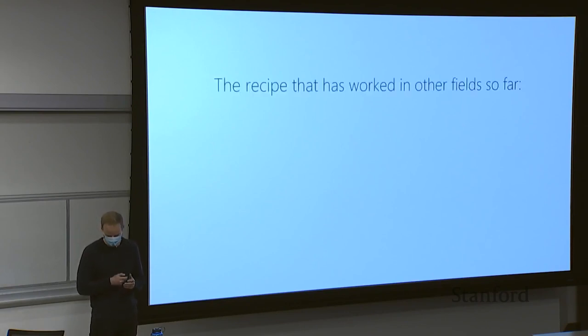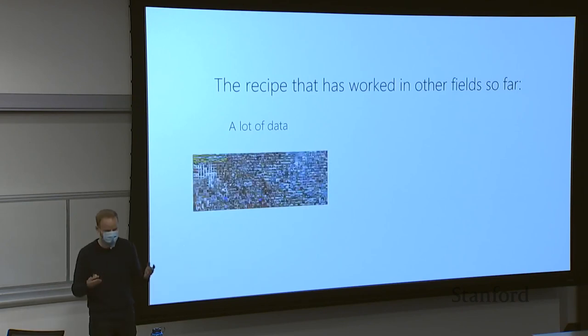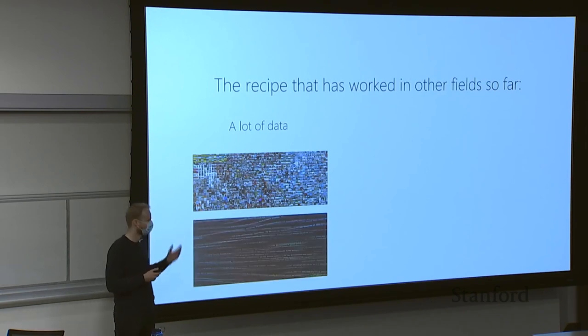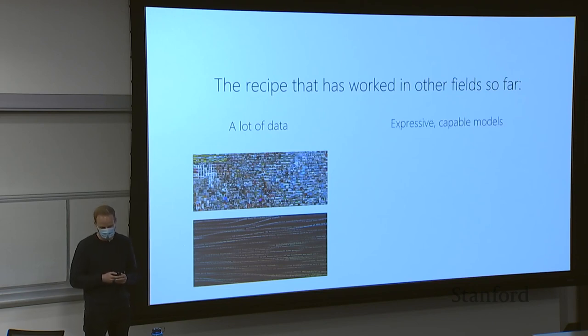Let's zoom out a little bit. We talked about multitask reinforcement learning, just reinforcement learning, and meta reinforcement learning. But let's zoom out and see what is the recipe that has worked so far for modern machine learning methods. We need two parts: we need a lot of data — for instance, datasets the size of ImageNet with a million images, or large corpora of text like all of Wikipedia — and we need expressive, capable models that are able to digest all of that data.